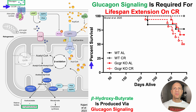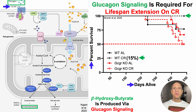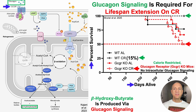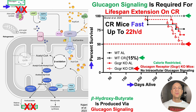On the y-axis, we've got percent survival plotted against days alive. Let's put up the red line at median survival — 50% survival. For 15% calorie restriction, all of the mice were still alive after 550 days. But for the GCGR — glucagon receptor knockout — calorie-restricted mice that had their glucagon receptor knocked out, half had already died. With no intracellular glucagon signaling, we'd expect very low levels of beta-hydroxybutyrate.